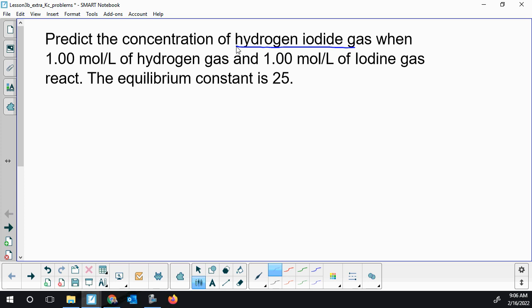The first thing you'd want to do is get an ICE table, get things set up, and then we'll think of which of the three strategies we're going to use to solve this. So we have hydrogen gas plus iodine gas.